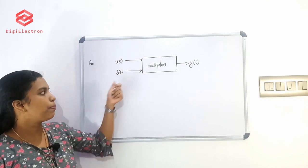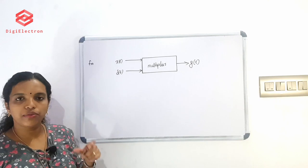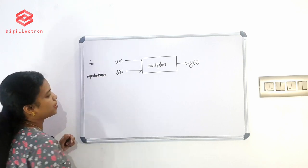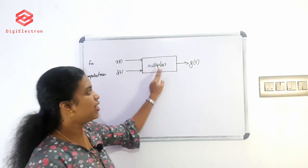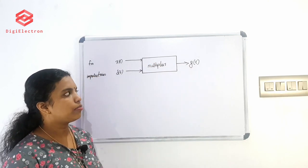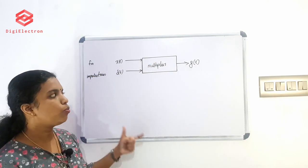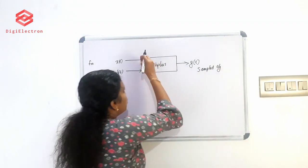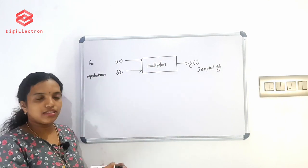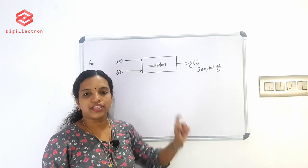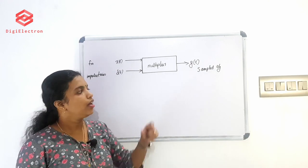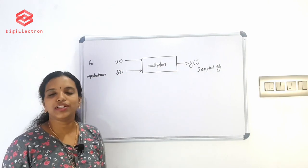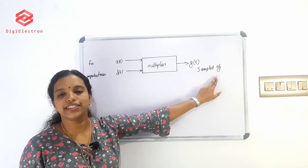Del(t) represents the impulse train, which is what we use as the carrier wave. We represent del(t). Then we multiply x(t) and del(t); the output is G(t), which is the sampled signal. That output signal is a discrete time signal. From the continuous time signal, after multiplication, we have a discrete sampled signal.